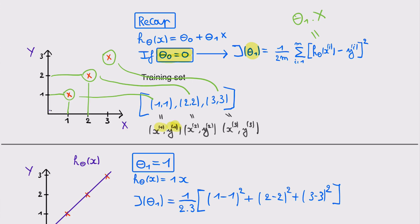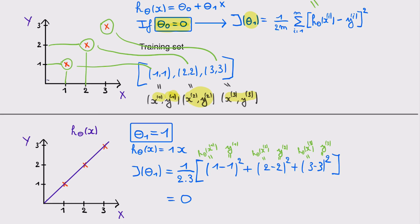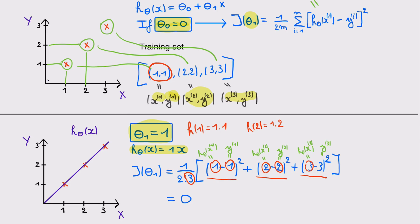We use superscript notation — superscript 1 for the first training sample, superscript 2 for the second, and so on. To see what it means to minimize the cost function, we look at three different values for theta 1. For theta 1 equal to 1, we get a hypothesis and calculate the cost function with m equal to 3. The errors for each training example are 1 minus 1, 2 minus 2, and 3 minus 3, giving a cost function value of 0.